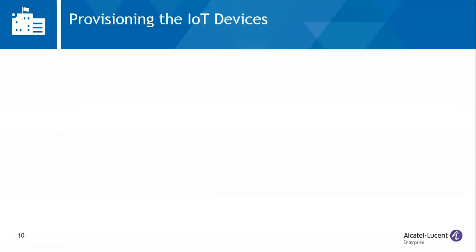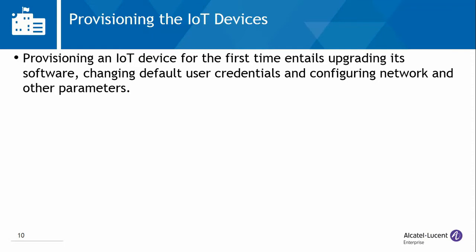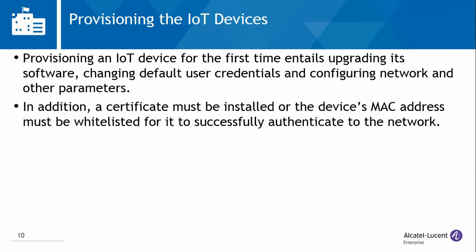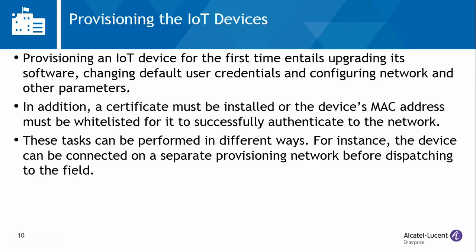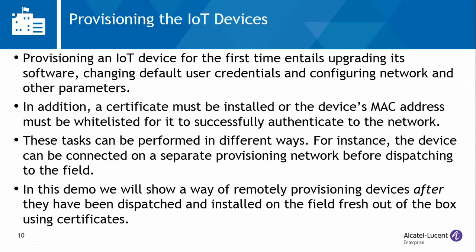Having provisioned the switch, the next step is to provision the IoT devices. Provisioning an IoT device for the first time entails upgrading its software, changing default user credentials and configuring network and other parameters. In addition, a certificate must be installed or the device's MAC address must be whitelisted for it to successfully authenticate to the network. In this demo, we will show a way of remotely provisioning devices after they have been dispatched and installed in the field, fresh out of the box, using certificates.